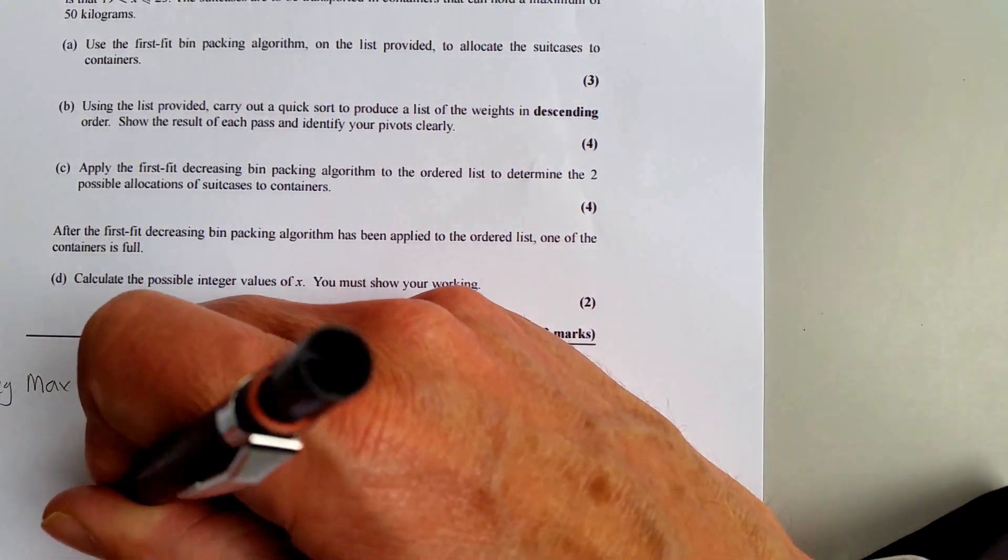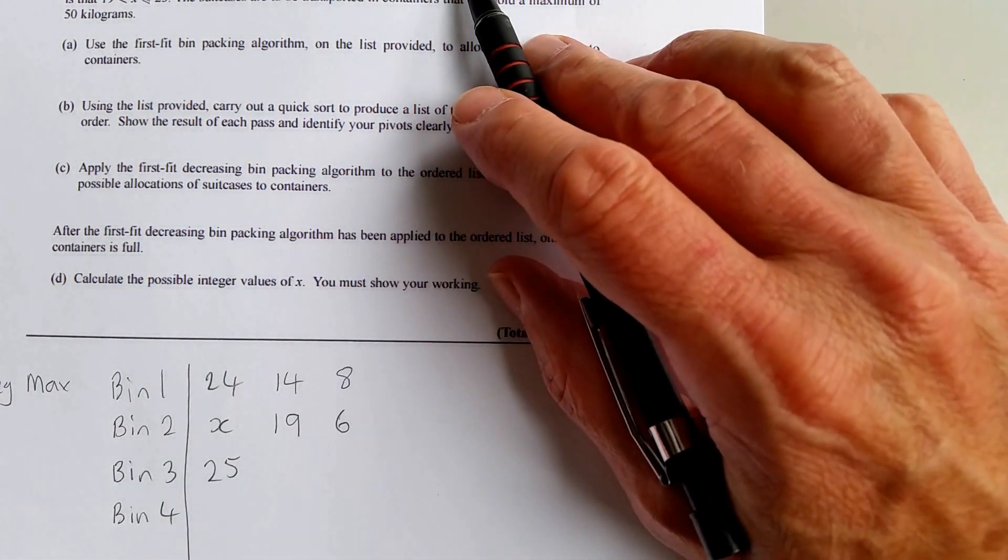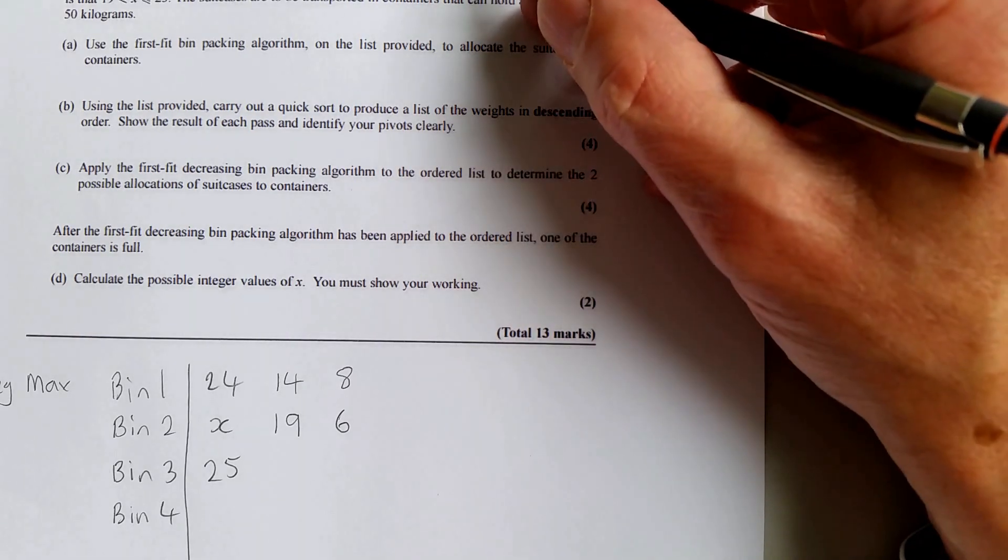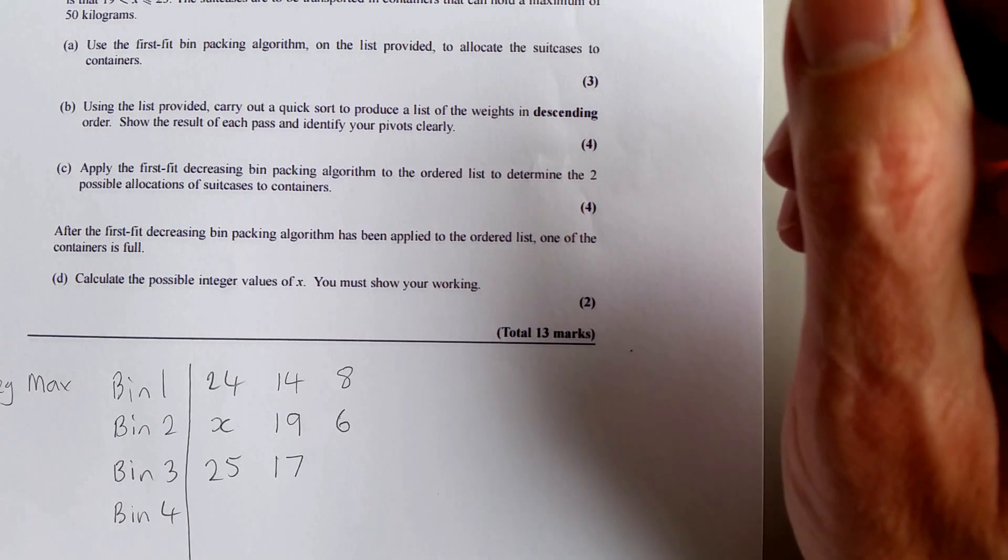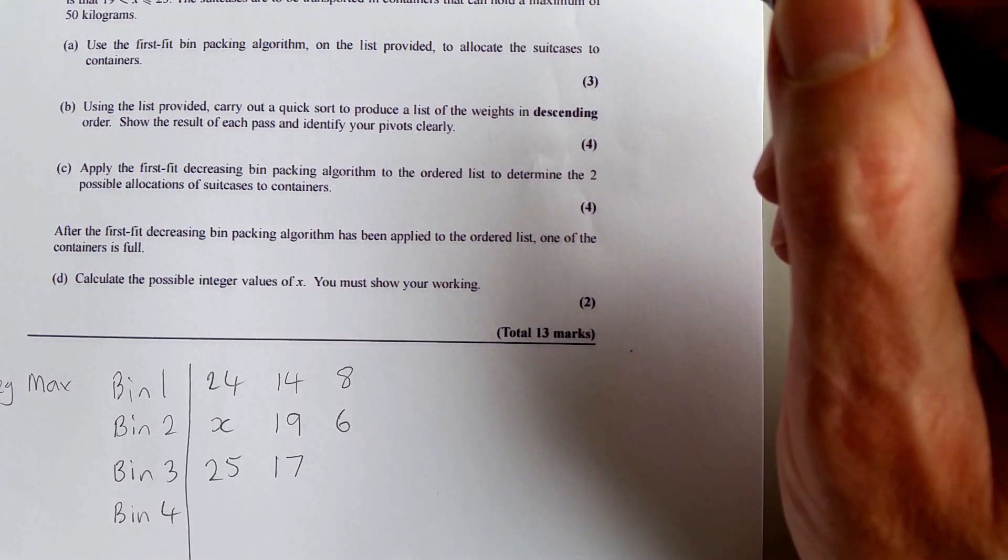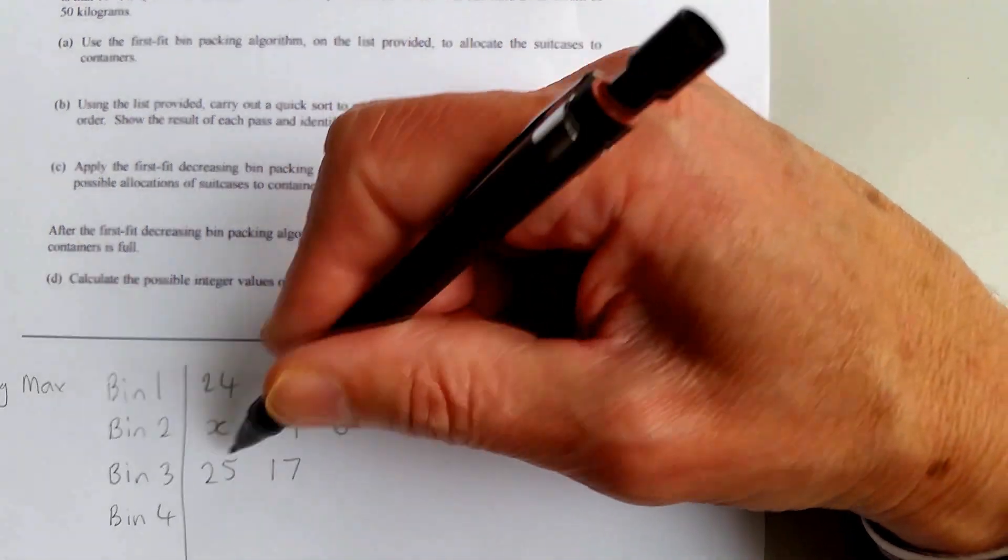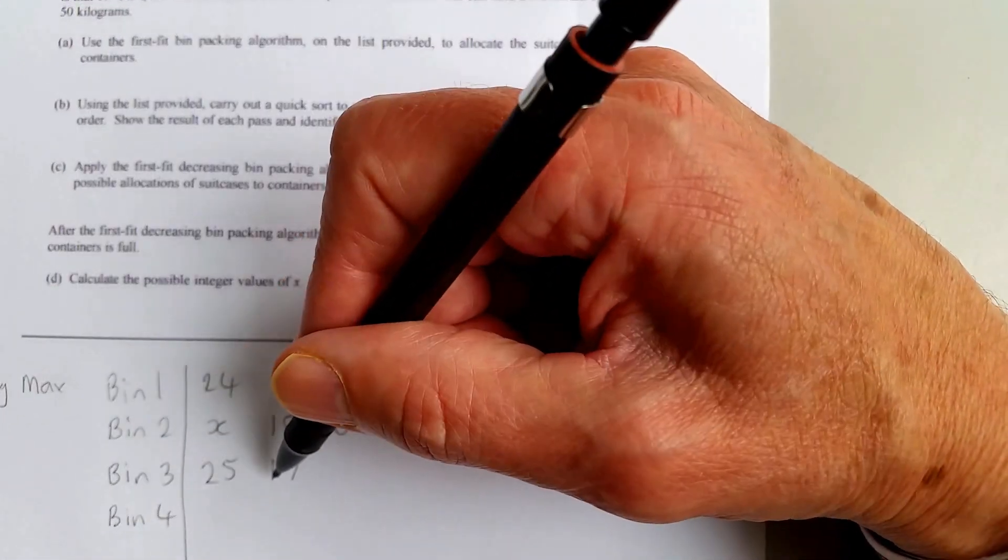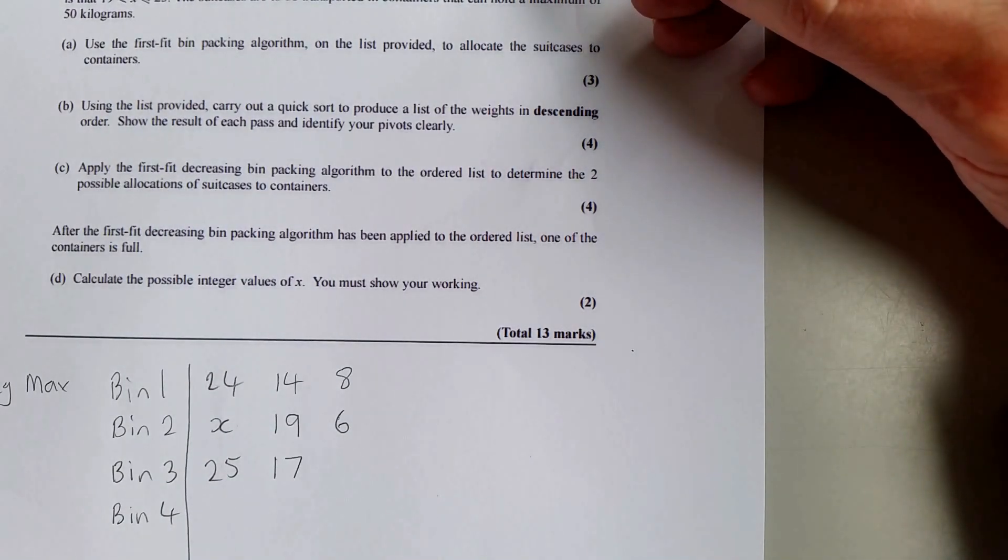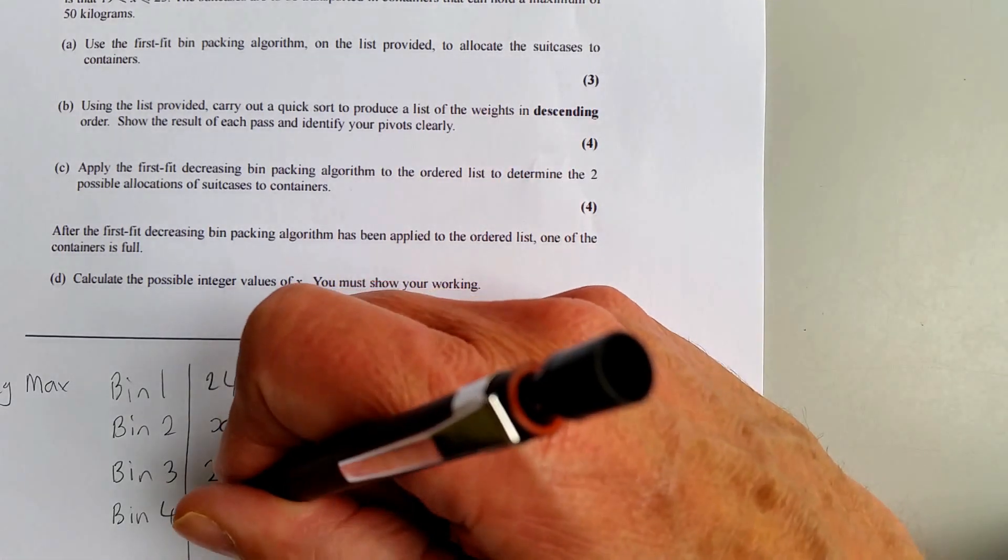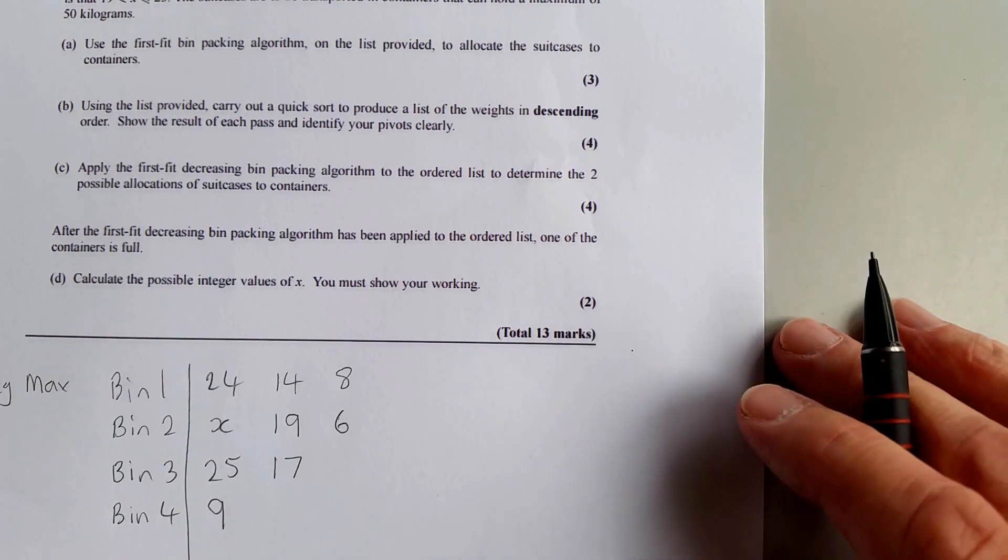Then the last values. For bin 3, 25 plus 17—we're going to have 41 here. Adding 9 would make 51, so 9 has to go in bin 4. And that's part A done.